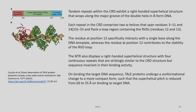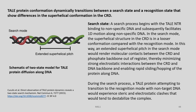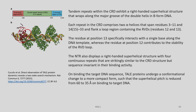On binding the target DNA sequence, the TAL proteins undergo a conformational change to a more compact form such that the super-helical pitch is reduced from 60 to 35 angstroms upon binding to target DNA — roughly about 50 percent shortening. This is the TAL protein conformation: the N-terminal domain has these 4 continuous repeats strikingly similar to the CRD structure but sequence-invariant in their binding.